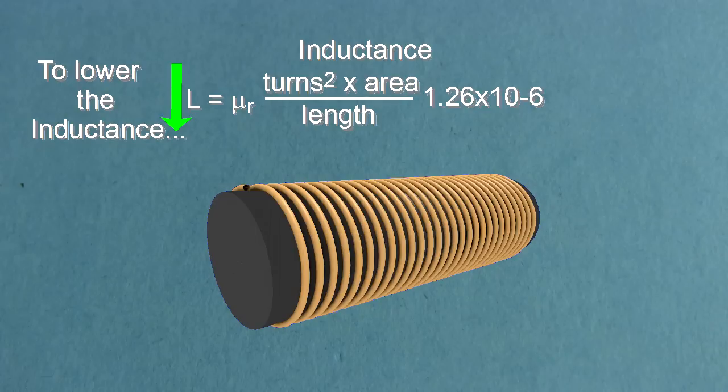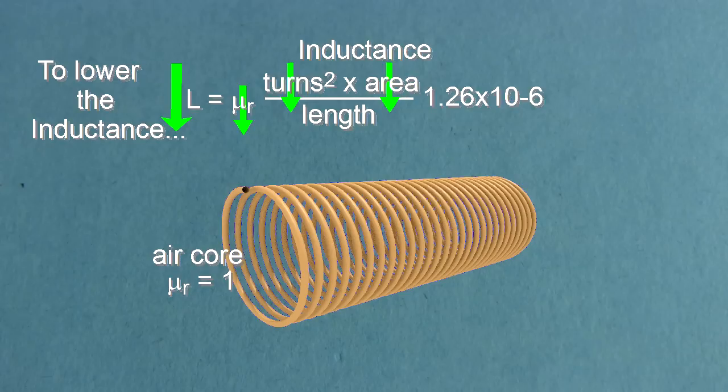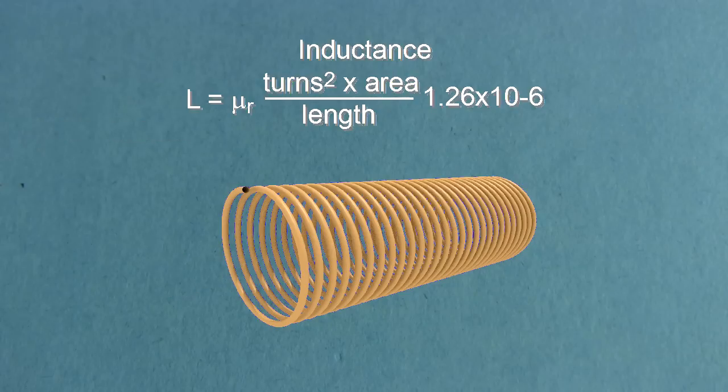If, on the other hand, you calculate an inductance that's higher than you want, then just do the opposite. Decrease the number of turns, the area, or switch to a lower permeability material. And that's how you design a coil for a specific inductance.